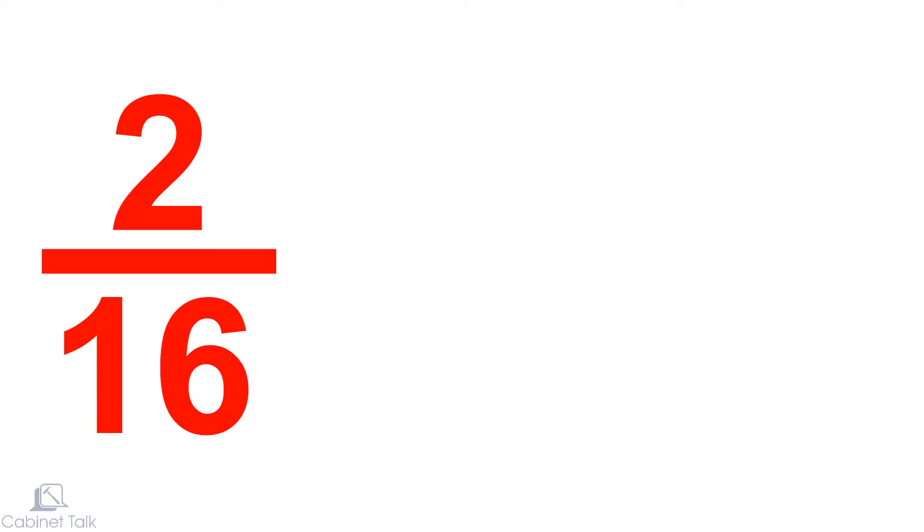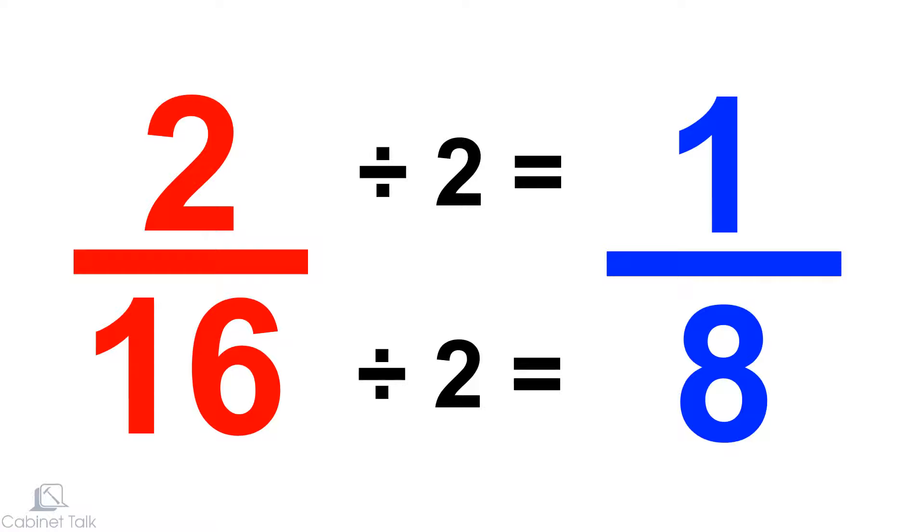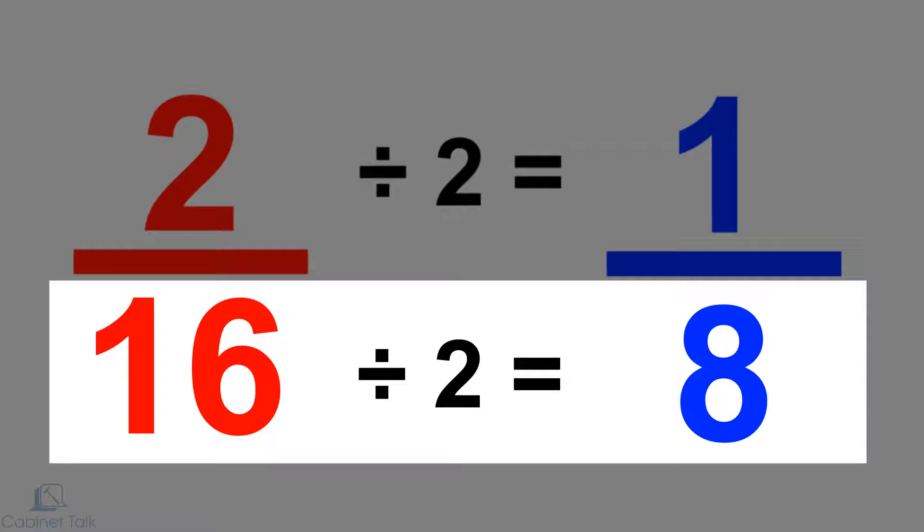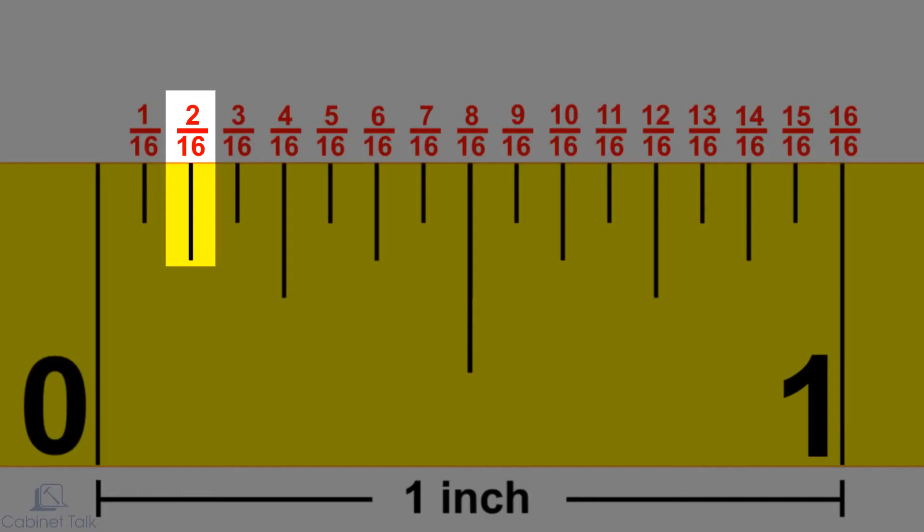This mark represents two sixteenths of an inch, but we can write this fraction another way. Two divided by two equals one, and sixteen divided by two equals eight. This means two sixteenths of an inch is equal to one eighth of an inch.